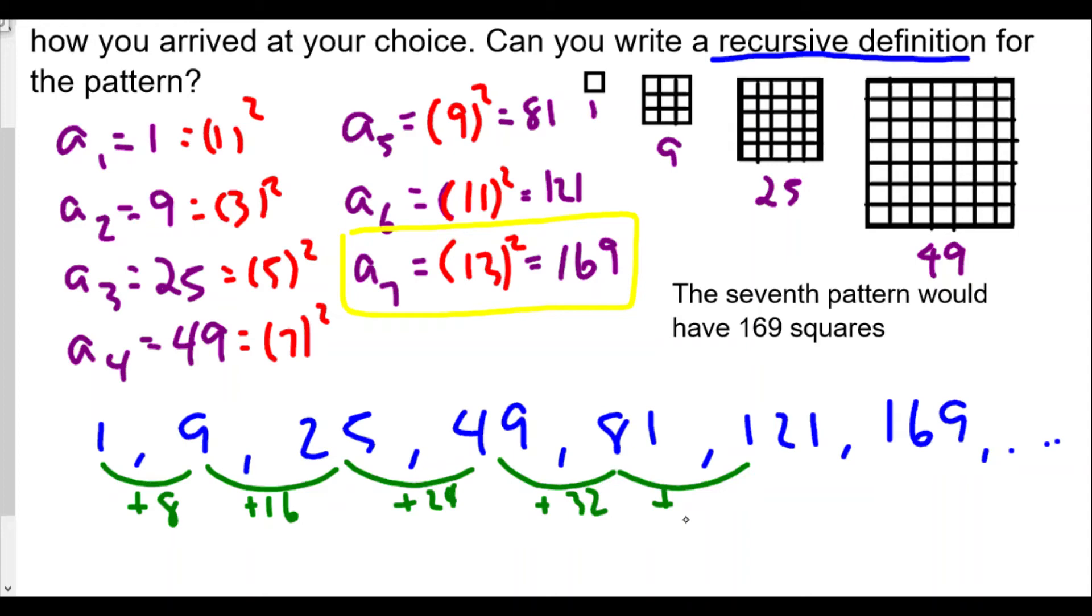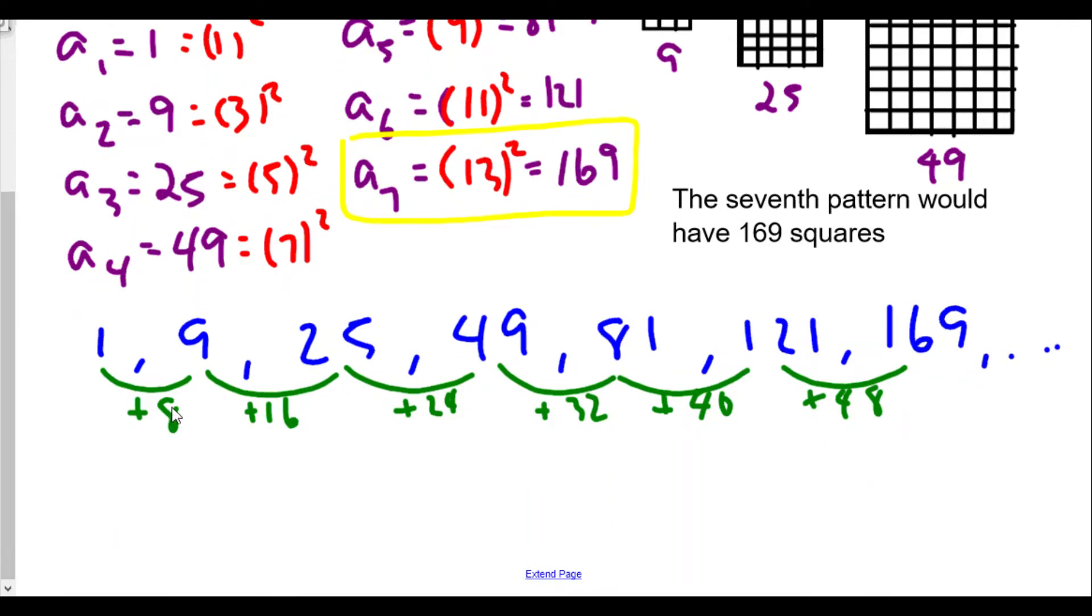And then we're adding in this case from one eighty one to one twenty one it looks like we're adding, well it looks like forty. And then here we're adding in this case forty eight. So we see that we're taking the previous number and we're going to be adding in this case eight but not just eight, it's going to be eight more than the previous one.